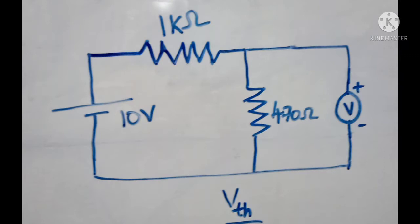The first step is measurement of Vth. In order to measure Vth, we need to open circuit the terminals to which the load resistor is connected and connect the voltmeter across those open circuit terminals in order to find Thevenin's voltage.